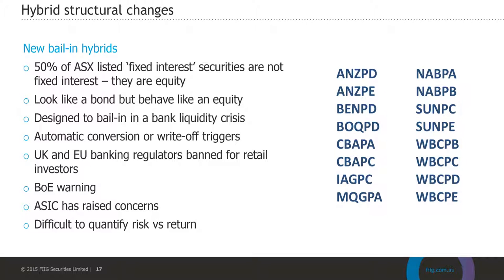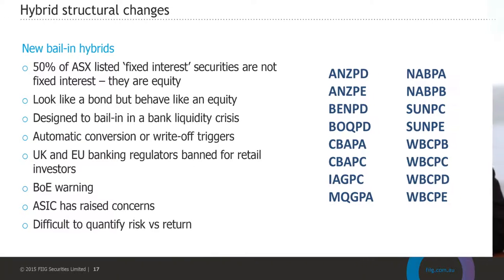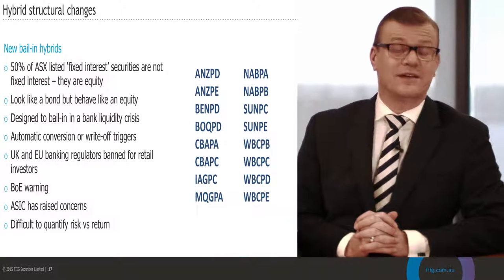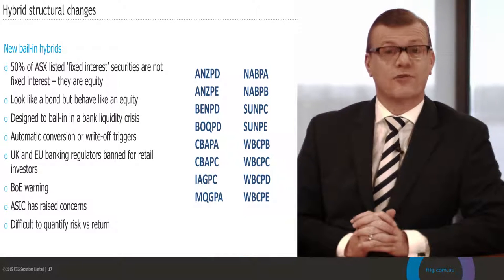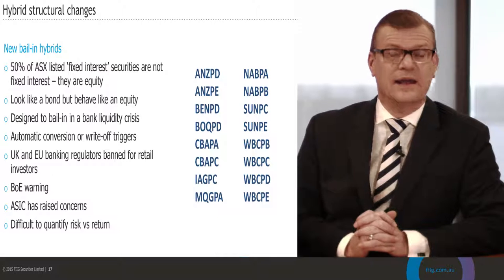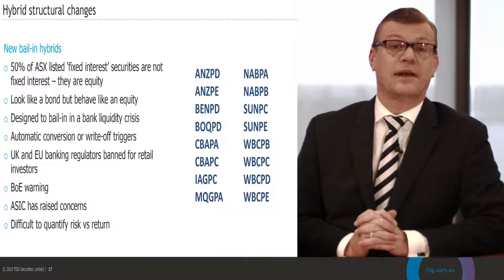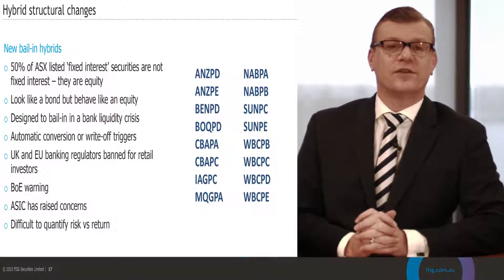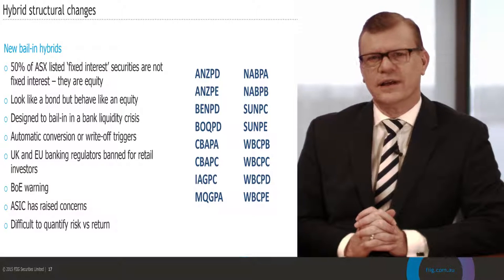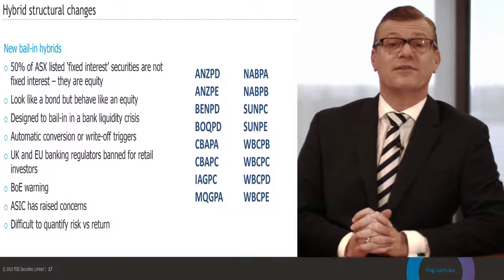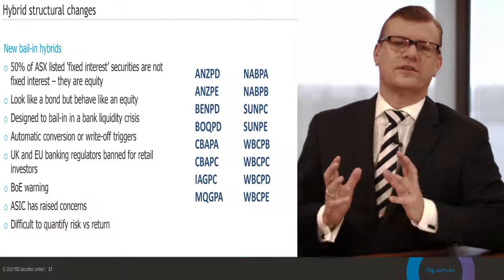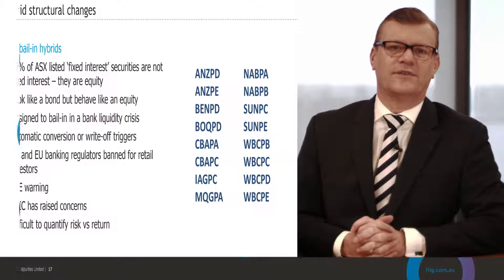A lot of investors have previously used hybrid securities or listed securities as their fixed income product, but there have been some big changes in the structure of these since the beginning of 2013. A lot of the protections that investors had, such as a hard call date and a step up, are no longer afforded. They now have significant non-viability clauses, and you can be left holding either shares or having your investment written off completely. So there's not a lot of certainty, and that's been reflected in quite a bit of volatility in the prices of these listed securities and a significant increase in the margin of the more recent ones. It's just important to know that you have these in the right basket and not using these as your defensive asset allocation.